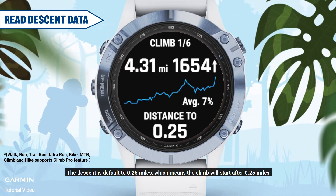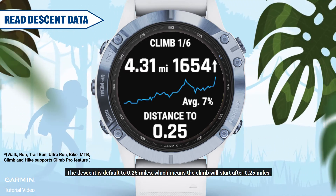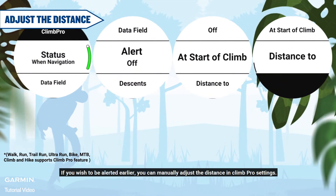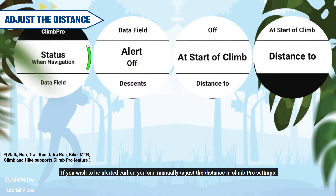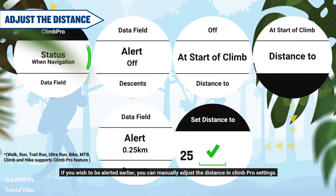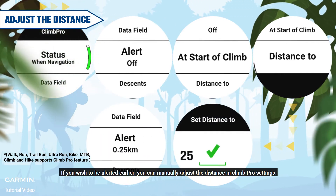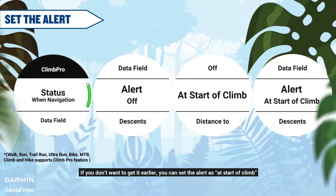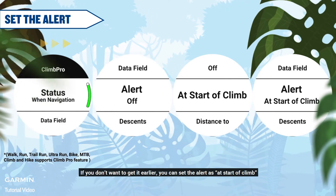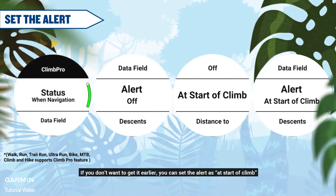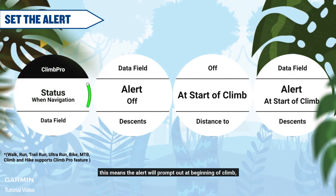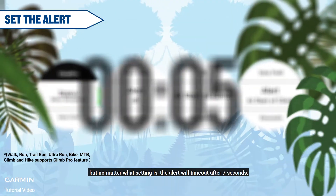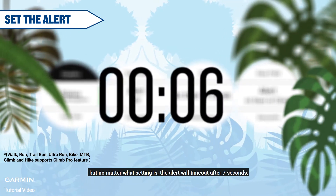The default alert distance is 0.25 miles, meaning the climb alert will trigger 0.25 miles before the climb starts. If you wish to be alerted earlier, you can manually adjust the distance in Climb Pro settings. If you don't want an early alert, you can set the alert to 'At Start of Climb,' which means the alert will prompt at the beginning of the climb.